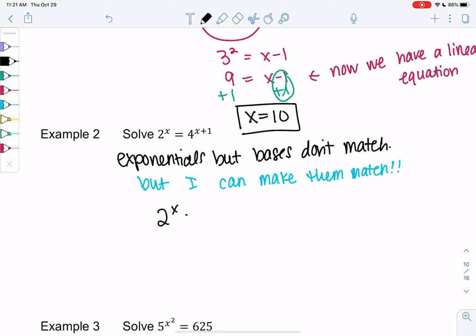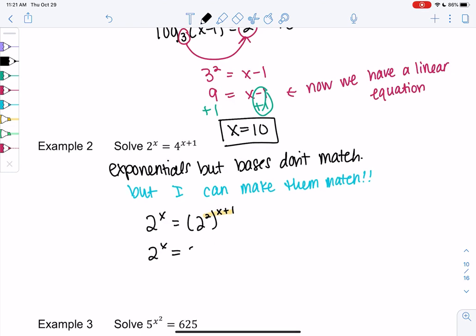So 2^x I'm going to leave as is. And then we probably know that 4 is 2². And then to the x plus 1. So we're almost ready to use that one-to-one property but I'm going to simplify the right side a little. So 2^x and then we learned we can multiply powers. So we get 2^(2x+2).